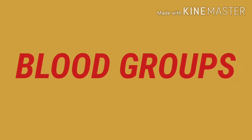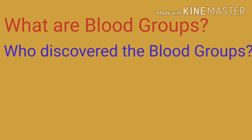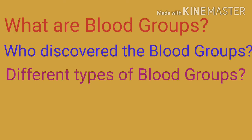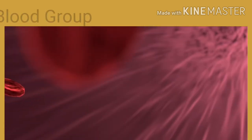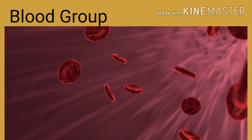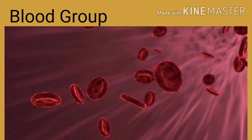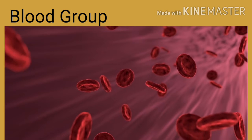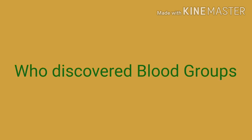In this video we are going to learn about blood groups: what are blood groups, who discovered them, and the different types. A blood type is a classification of blood based on the presence and absence of antibodies and inherited antigenic substances on the surface of red blood cells. A total of 36 human blood group systems and 346 antigens are now recognized by the ISBT.